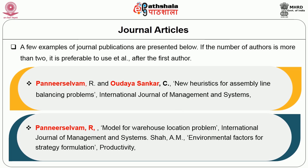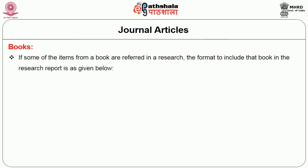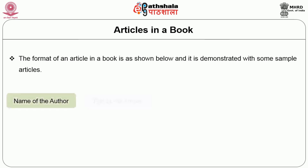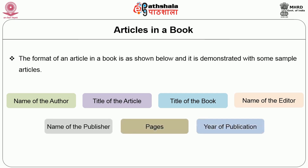If the number of authors is more than two, it is preferable to use 'et al.' after the first author. For example: Pandeer Selvam and Odaya Sangha, title of the article, name of the journal, volume, number, year, page number. For book references, the format includes: author name, title of the book, name of the publisher, place of publication, and year of publication.